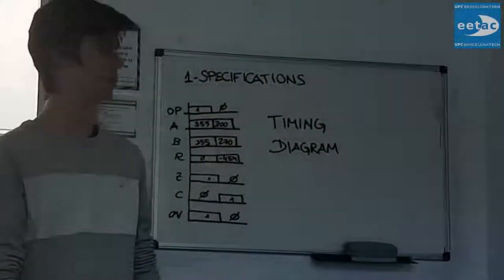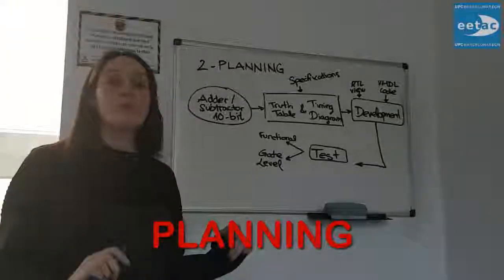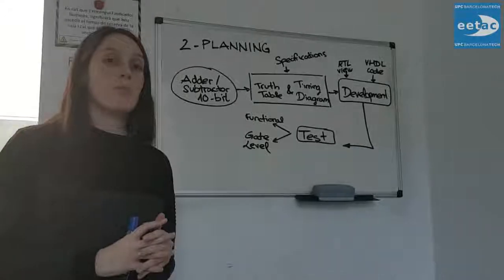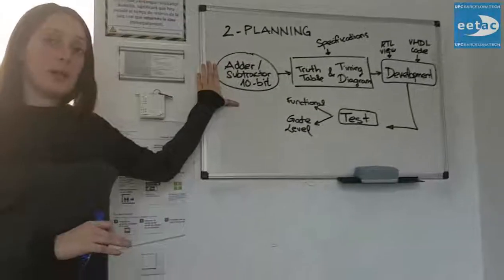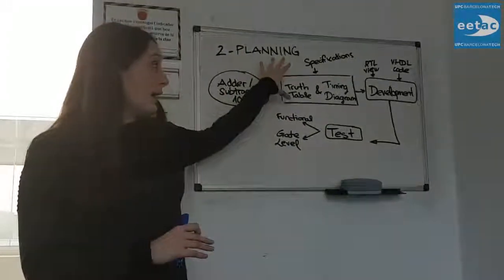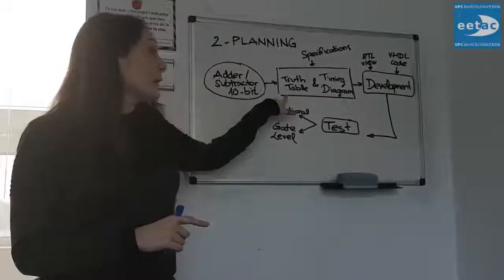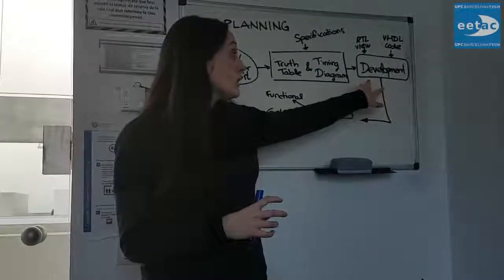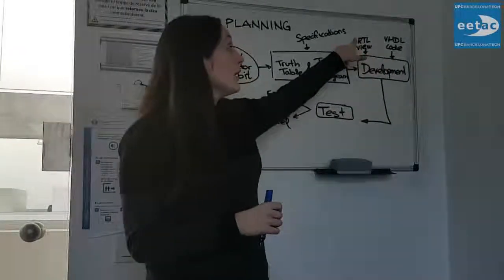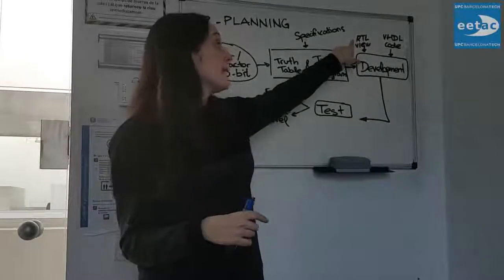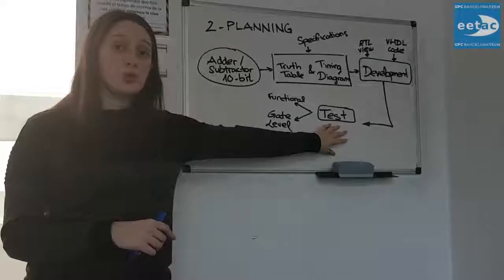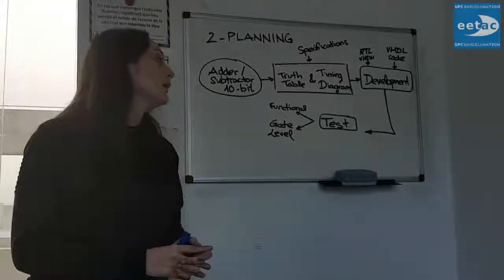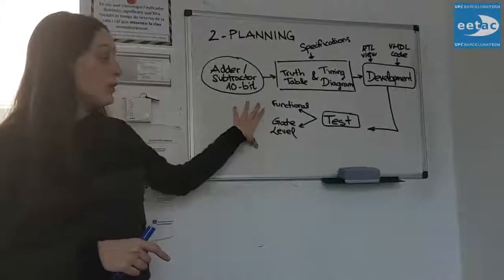To represent the previous examples, we make this timing diagram. Now in another sheet of paper, it's time to develop a planning. It's an important step of the project. So we know that we have to develop an adder subtractor, 10 bits. First of all, we have the specifications that are the symbol, the truth table, and the timing diagram. So now we have to make the development. The development consists in the code and also the display of this code to obtain the RTL view. And finally, it's necessary to do a verification or test to know if we are doing it in the right way. So there are two kinds of tests, functional and gate level.